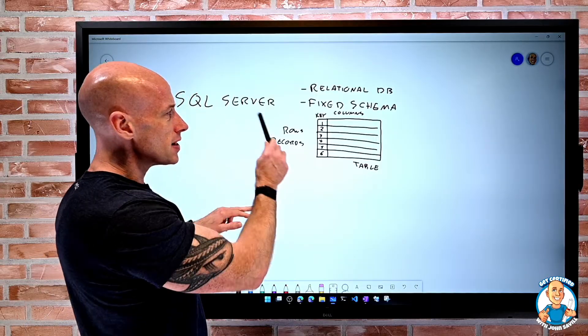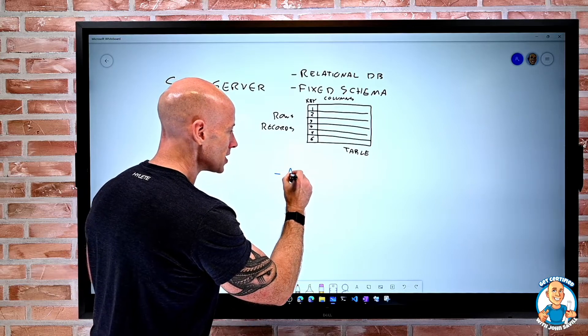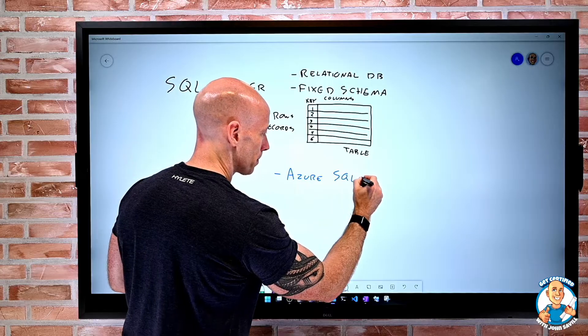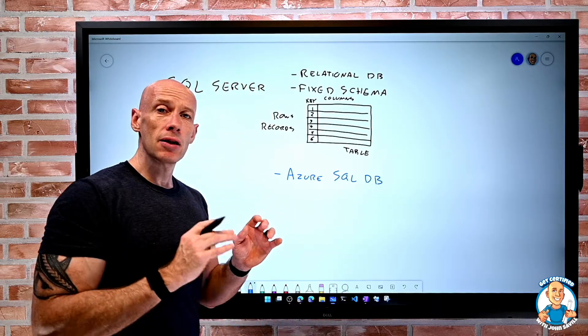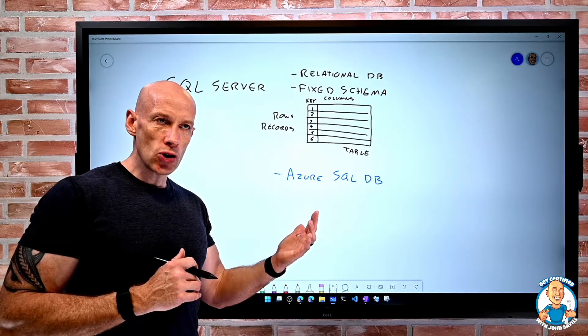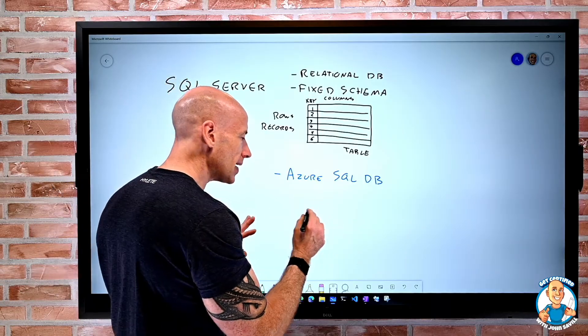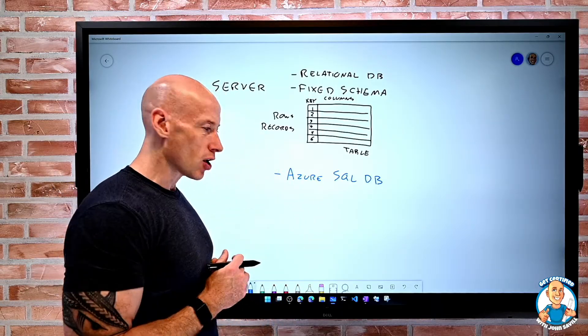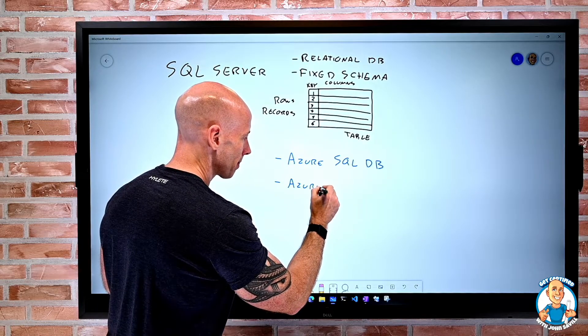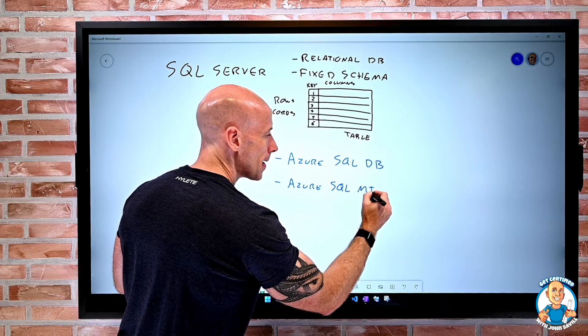So this idea of SQL Server, there's actually different offerings. There's Azure SQL Database. This is a complete managed offering. There are various SKUs with different aspects of scale and different features, but this is complete managed as a PaaS service. Then you'll actually see there's Azure SQL MI, managed instance.